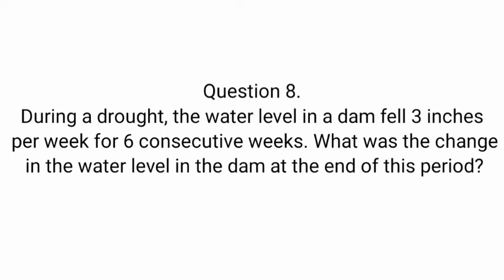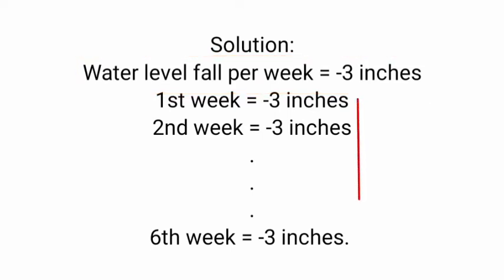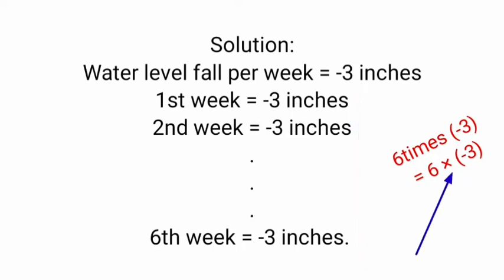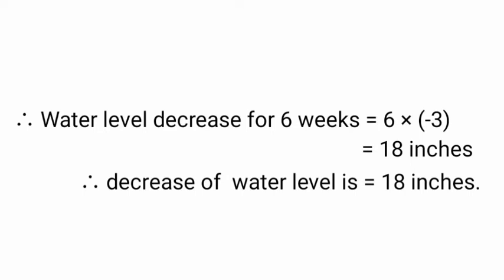Next, Question 8: During a drought, the water level in a dam fell 3 inches per week for 6 consecutive weeks. What was the change in the water level at the end of this period? Water level fall per week is minus 3 inches, reducing equally from week 1 to week 6 — that is 6 times minus 3, which is 6 into minus 3. Therefore the water level decrease for 6 weeks is 18 inches.